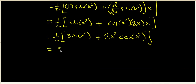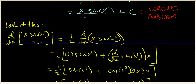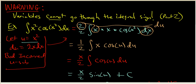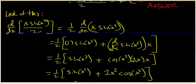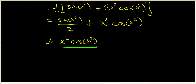So we're now looking at one half times the quantity sine of x squared plus 2x squared times cosine of x squared. When we simplify this algebraically, we get sine of x squared over 2 plus x squared times cosine of x squared. This is most definitely not just x squared times cosine of x squared, which was our original integrand.